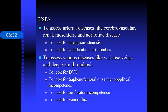Duplex scan is primarily used to assess arterial diseases like cerebrovascular, renal, mesenteric, and aortoiliac disease. It can detect aneurysms, stenosis, calcification, and thrombus, especially in the lower extremities. For venous disease, it is used to assess varicose veins and deep vein thrombosis, look for incompetence of the saphenofemoral or saphenopopliteal junction, perforator incompetence, and venous reflux.